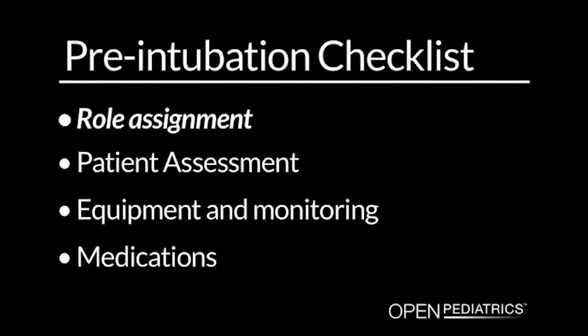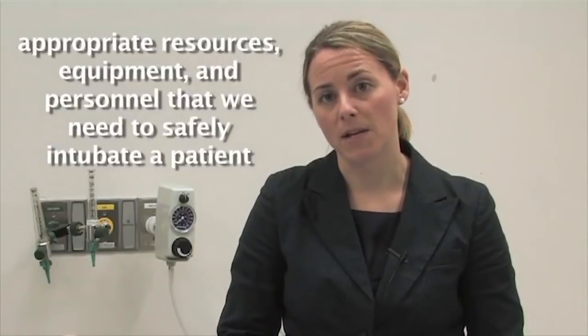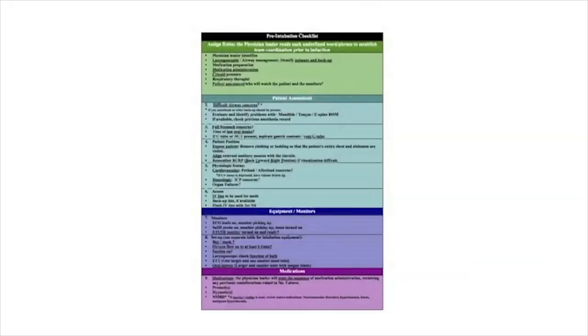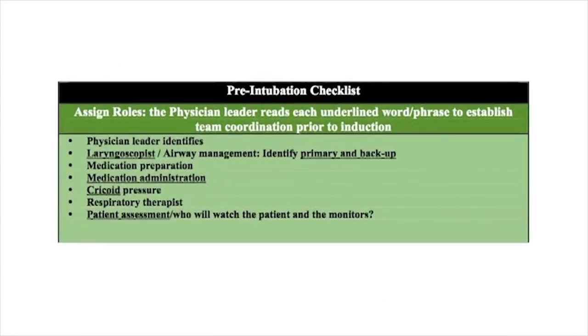Role Assignment. To begin with, once we've decided that we want to intubate a patient, we want to make sure that we have all of the available equipment, resources, and personnel that we need to safely intubate a patient. So we begin by going through our checklist. The first thing we look at is we assign roles — different people to perform different tasks during the intubation. First of all, someone identifies themselves as the physician leader. Typically, this is an attending physician, a senior fellow, or one of the senior doctors.